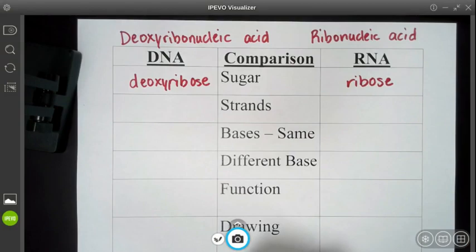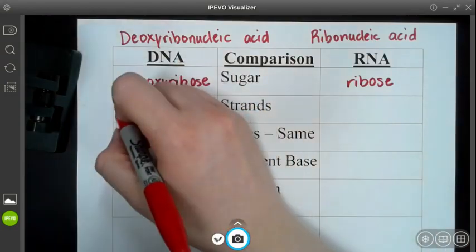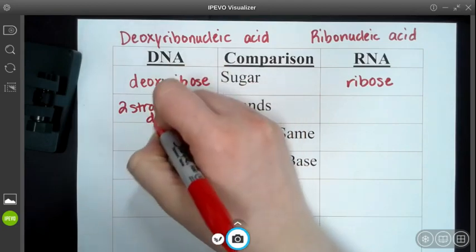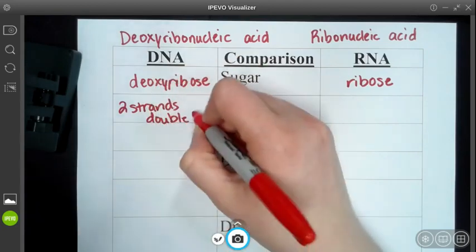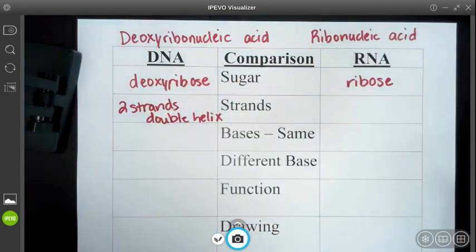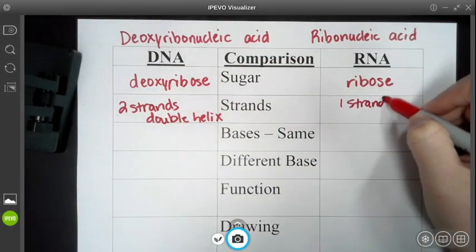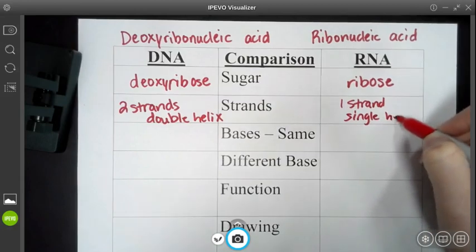Strands. Now strands has to do with the number of strands. DNA actually has two strands, and we refer to it as a double helix. RNA is only one strand, so it is a single helix.